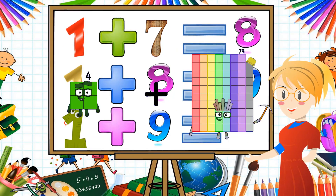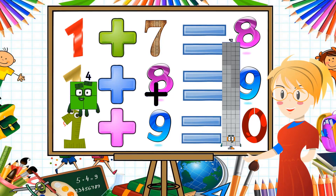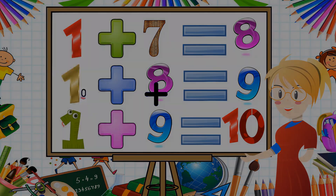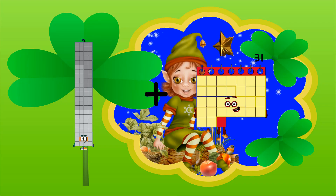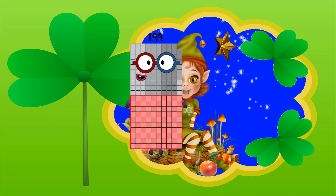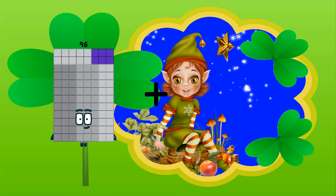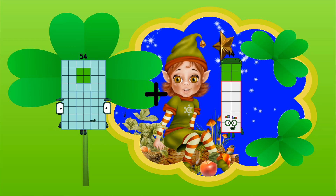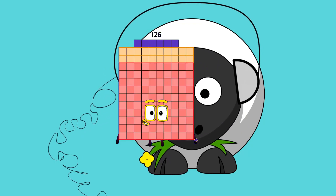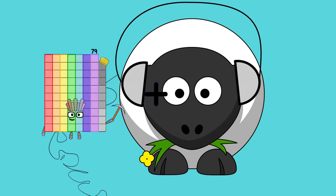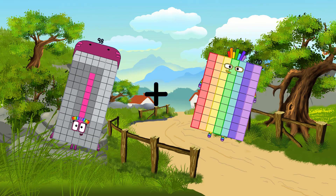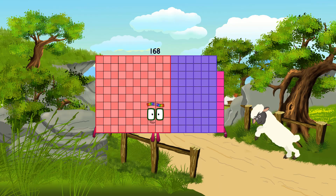4 plus 92 equals 96. 92 plus 107 equals 199. 54 plus 72 equals 126. 98 plus 70 equals 168.